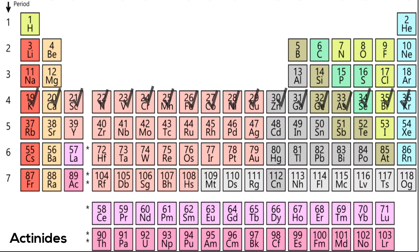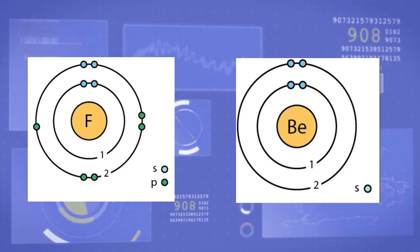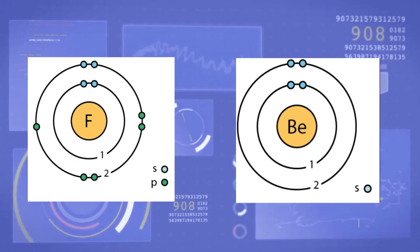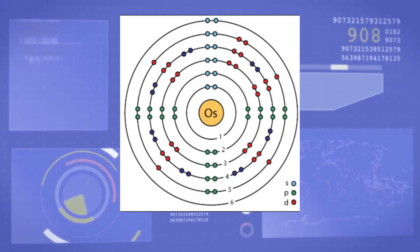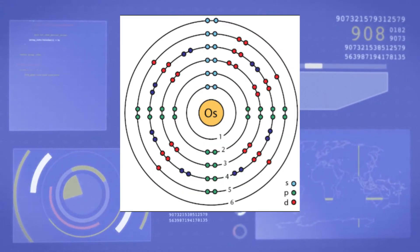Each element in the same row or period all contain the same number of electron shells. Elements in Period 2 will have two electron shells. Period 6 will have six electron shells.